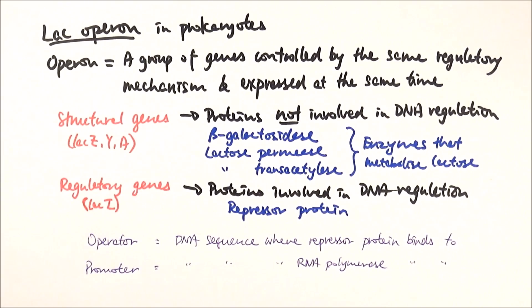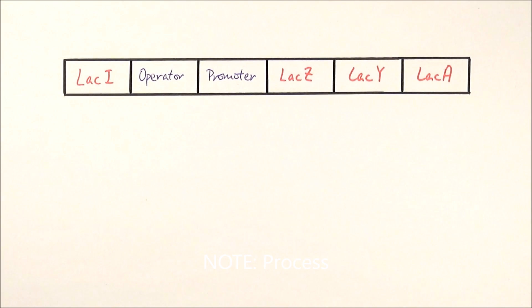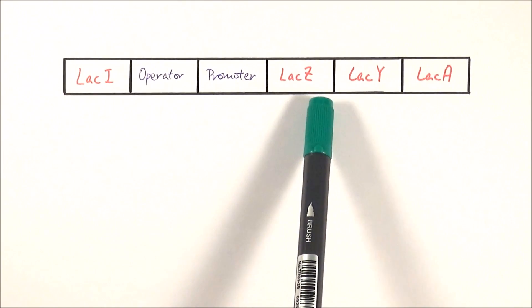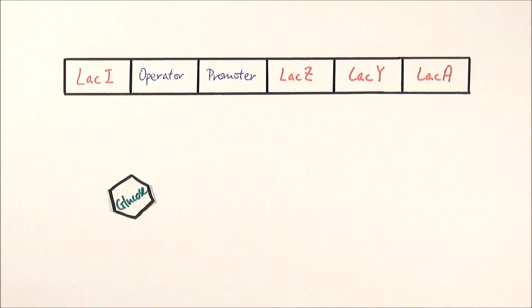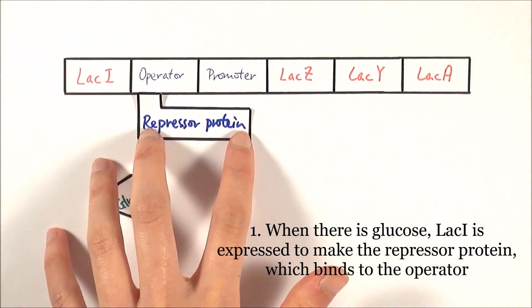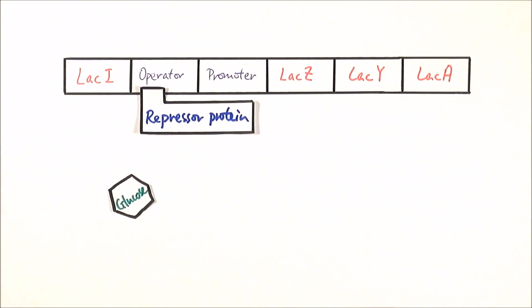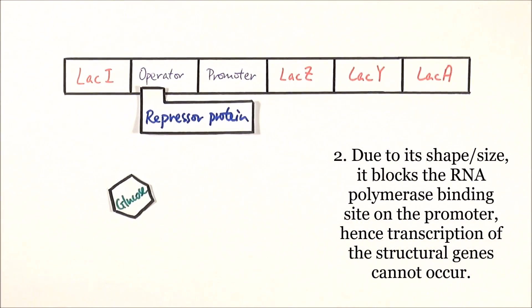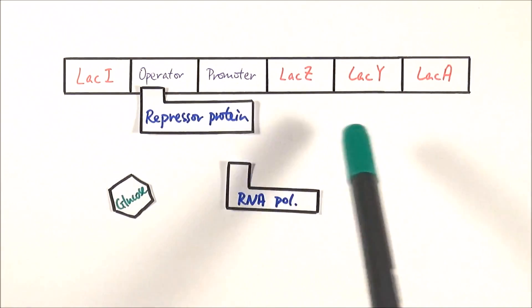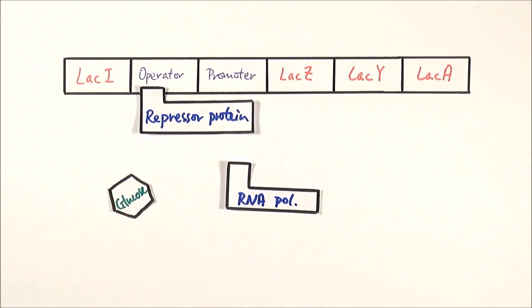Now if we draw the LAC operon, we have the LAC-I gene coding for the repressor protein, then the operator, the promoter, and the three structural genes. In a normal situation where glucose is available, the LAC-I gene codes for the repressor protein. When expressed, the repressor protein binds to the operator — it's quite large — and blocks the binding site of RNA polymerase to the promoter. So the RNA polymerase cannot bind to the promoter to start transcription. That is the normal situation when there is plenty of glucose.